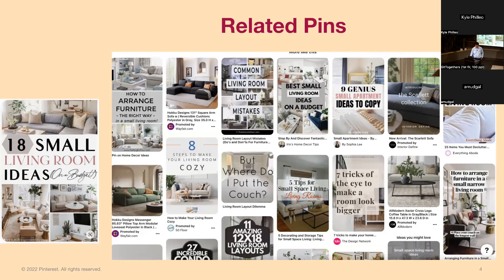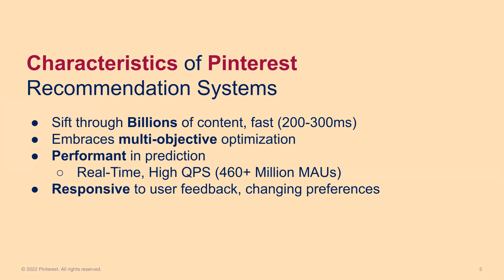Now let's see how ads enter the ecosystem. Ads are content promoted by advertisers, which help connect users with relevant content, bringing the right inspiration. The 'promoted by' symbol is how you can identify ads on the platform. Pinterest has billions of content, so we need to sift through this content in low latency — as fast as 200 to 300 milliseconds — and be able to perform predictions scaled to around 460 million monthly active users.